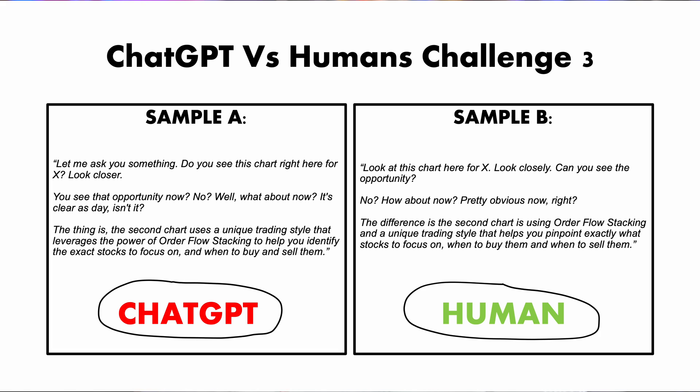Sample A was generated by ChatGPT and sample B was written by a human. Did you guess correctly this time? And how have you done overall? Did you get any right? Did you get any wrong? Were you surprised by some of the texts? Share your score in the comments below and let us know if any of the AI-generated samples surprised you. As you can see, the AI samples are actually quite good. Don't forget to like this video and subscribe for more fascinating AI and digital marketing content. Thanks for playing along with this quick quiz and I hope to see you in one of our next videos.